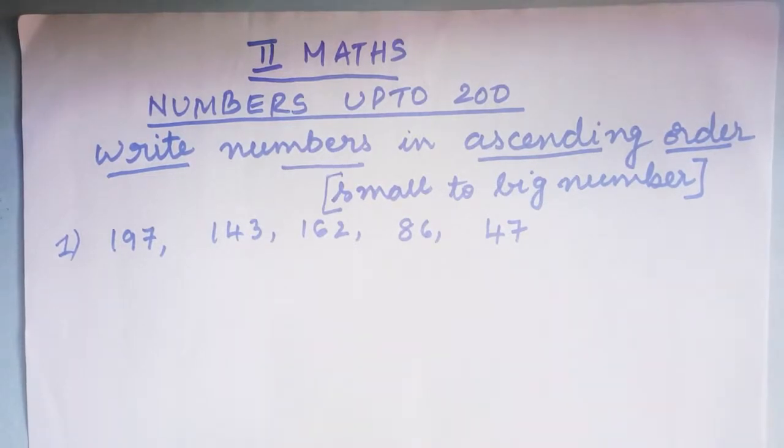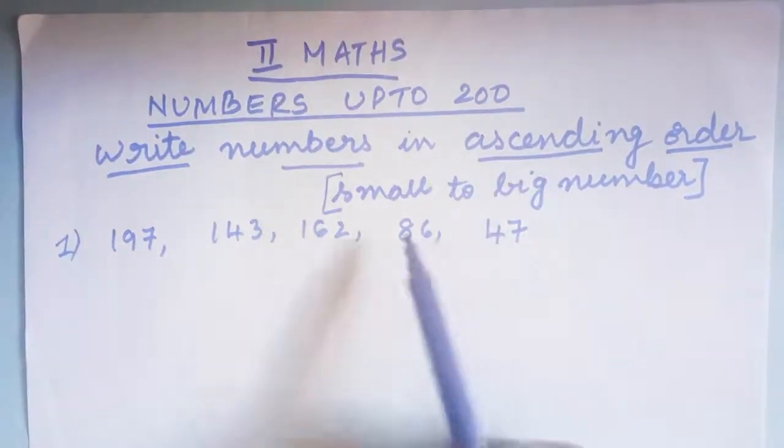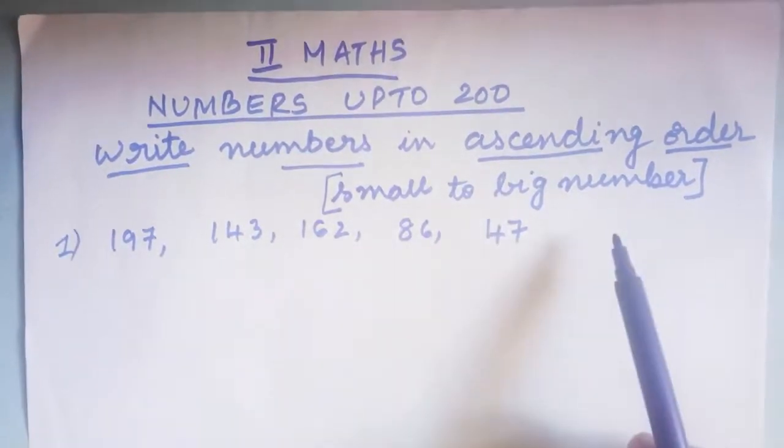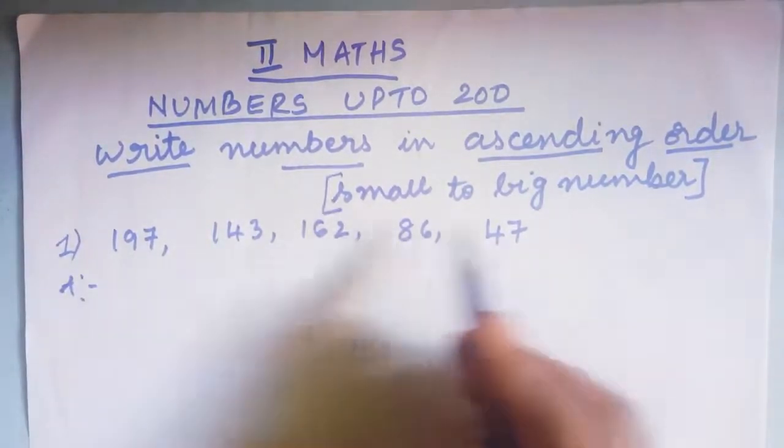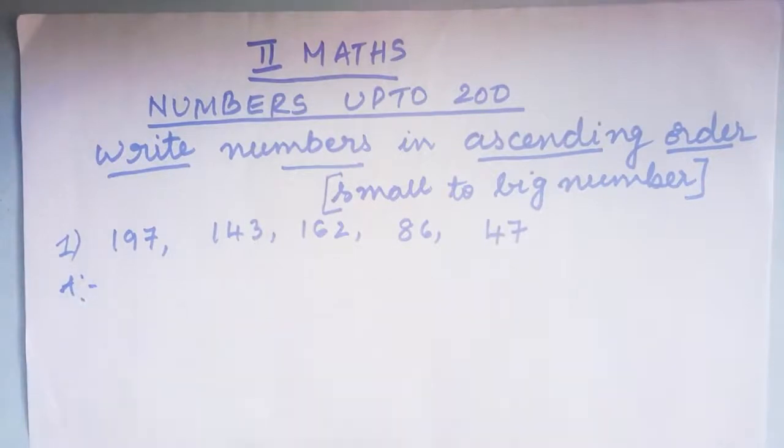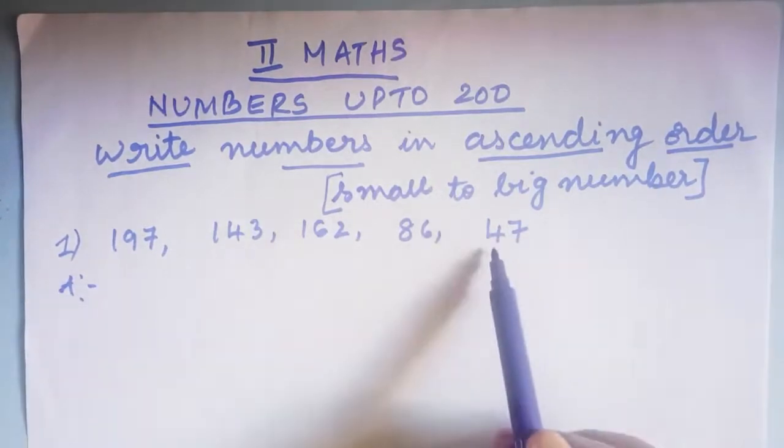In what order do we have to arrange? We have to arrange in ascending order, that is from small number to big number. Let us see how we can write it. Small to big means I have to find the smallest number out of these 5 numbers. Out of these 5 numbers, 47 is the smallest one.